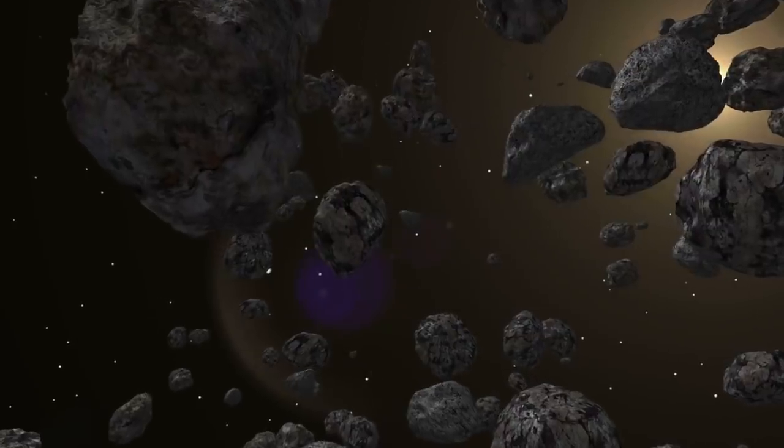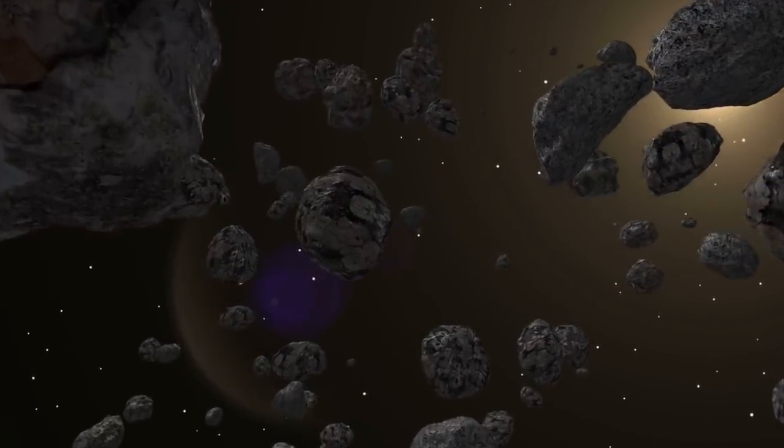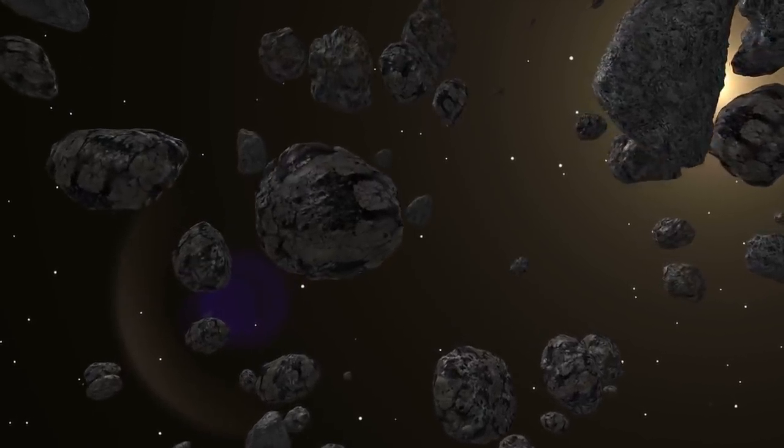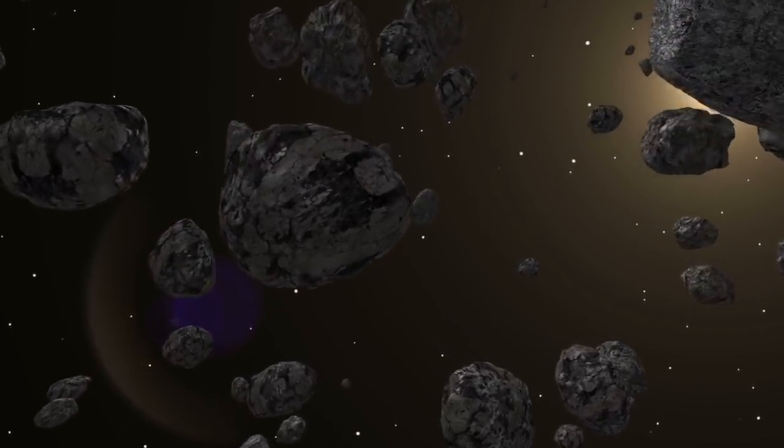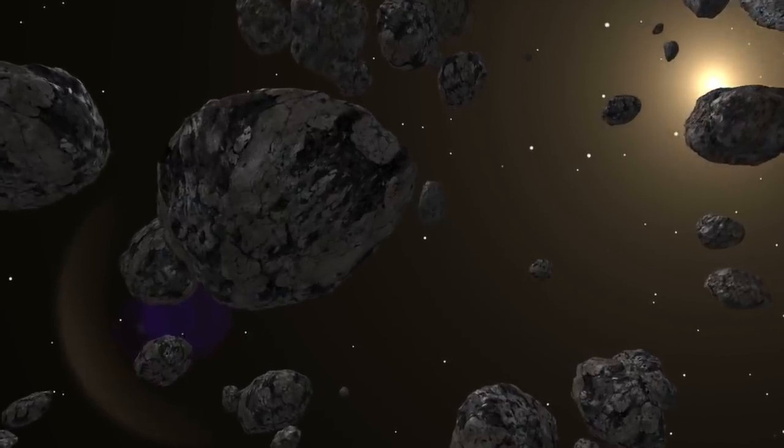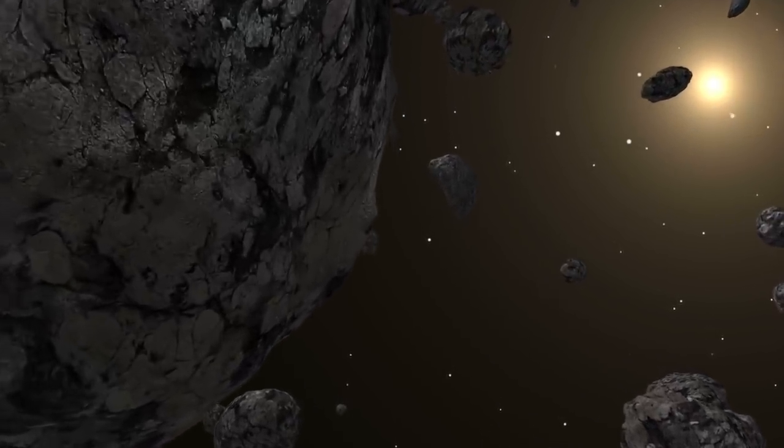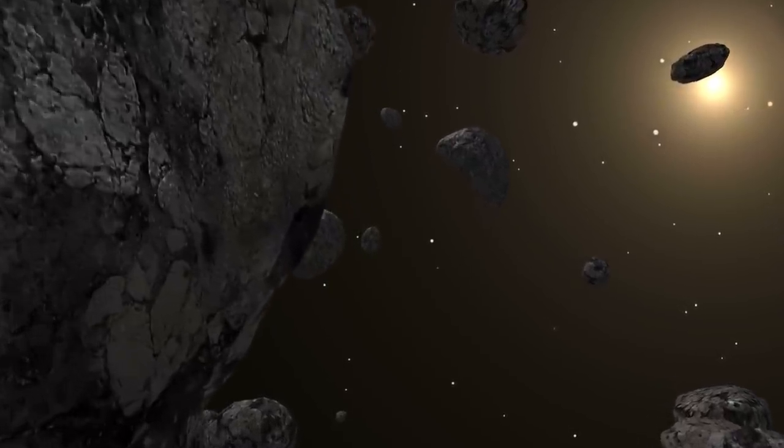NASA went on to say that their research showed that this asteroid in question is over 3,200 feet in diameter, and although it's not as big as the asteroid that wiped out the dinosaurs, if it were to make contact with our planet it could potentially set off a chain of events, including that of setting off supervolcanoes.